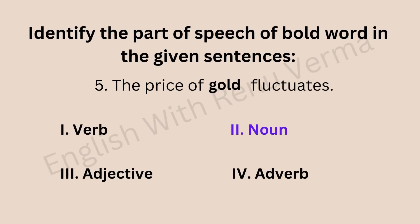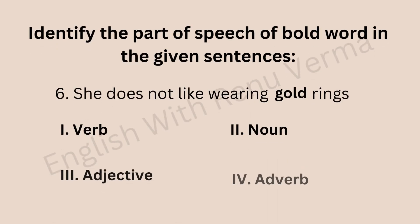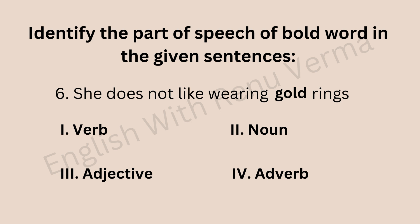In 'The price of gold fluctuates,' gold is a noun. But in the sentence 'She doesn't like wearing gold rings,' the same word gold is not a noun. Here, gold is describing 'rings' — what kind of rings? Gold rings. So gold is an adjective because it is describing the noun 'rings.'